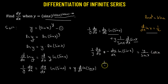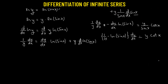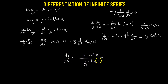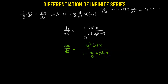The derivative of sin(x) is cosine(x), so we have y divided by sin(x) times cos(x). Since cosine over sine is the cotangent function, this simplifies to y times cot(x). Factoring, we get (1/y minus log(sin x)) times dy/dx equals y times cot(x). Isolating dy/dx and dividing numerator and denominator by y gives the final answer: dy/dx equals y² times cot(x) divided by (1 minus y times log(sin x)). This is the derivative of the infinite series y with respect to x.